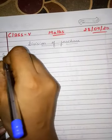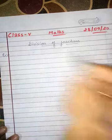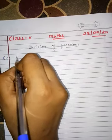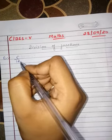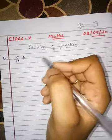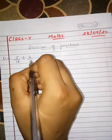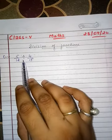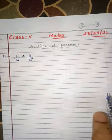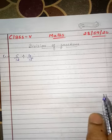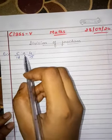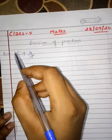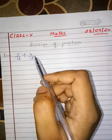See the examples. Suppose the question is 5 by 12 divided by 4 by 15. This fraction 5 by 12 is the dividend and 4 by 15 is the divisor.